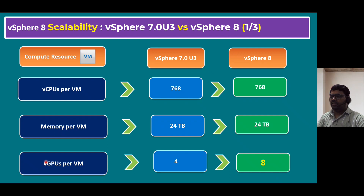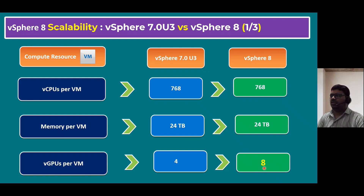Another difference is virtual GPU graphical processing units per virtual machine. Earlier in vSphere 7.0, we could assign a maximum of four vGPU devices per VM. At VMware Explore 2022, VMware officially confirmed that in vSphere 8 the maximum vGPUs per VM is eight — so it's easy to remember: based on the version number, we can assign a maximum of eight vGPUs.